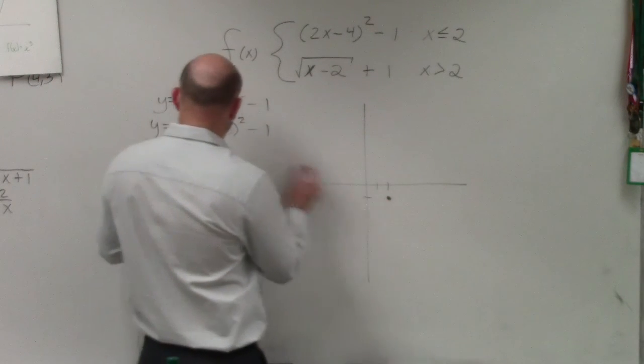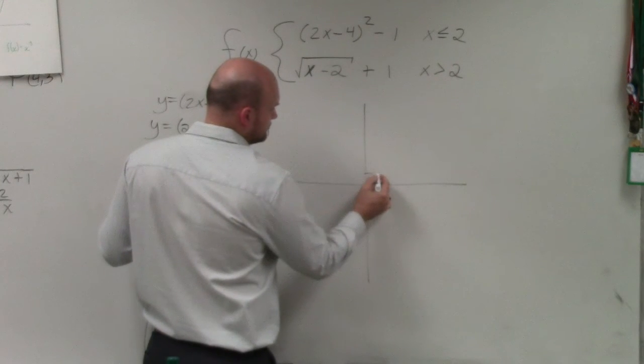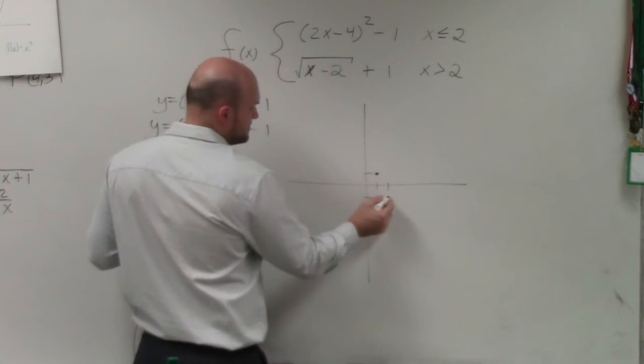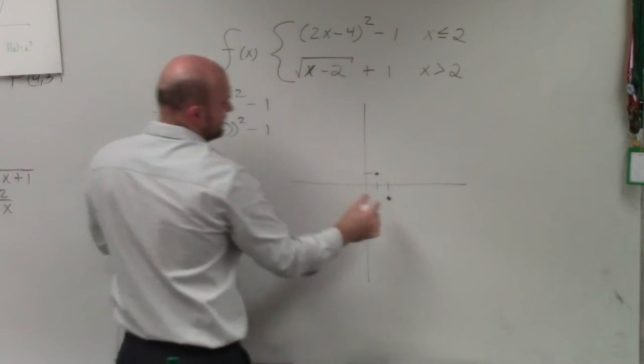But what that's making us do is basically going over 2, over 1, up 2. And, oh, I'm sorry. Over, yeah, over 1, up 2. And that is less than or equal to 2.